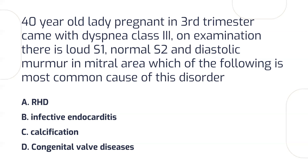Diastolic murmurs are associated with mitral stenosis and tricuspid stenosis, as well as aortic regurgitation and pulmonary regurgitation. Systolic murmurs are associated with mitral regurgitation, tricuspid regurgitation, aortic stenosis, and pulmonary stenosis. So if you hear a systolic murmur, consider mitral regurgitation; if you hear a diastolic murmur, consider mitral stenosis or tricuspid stenosis.